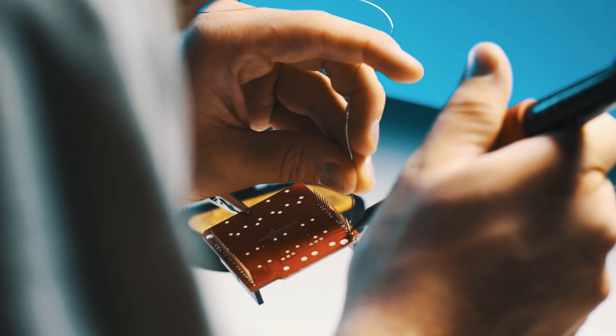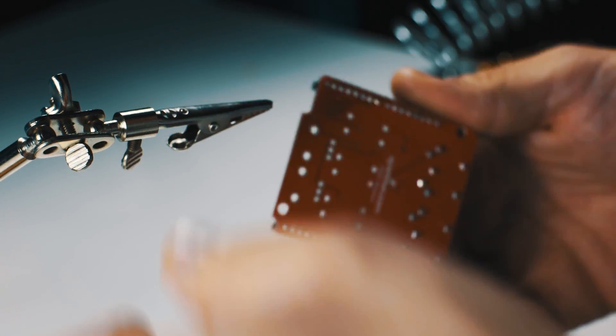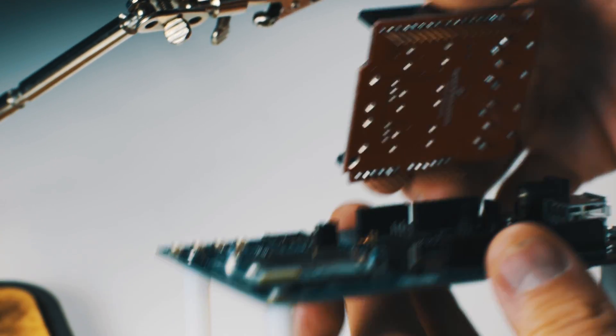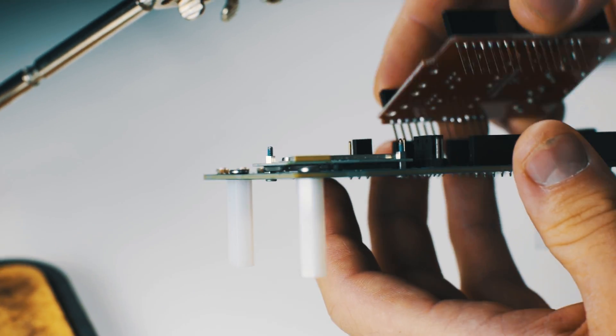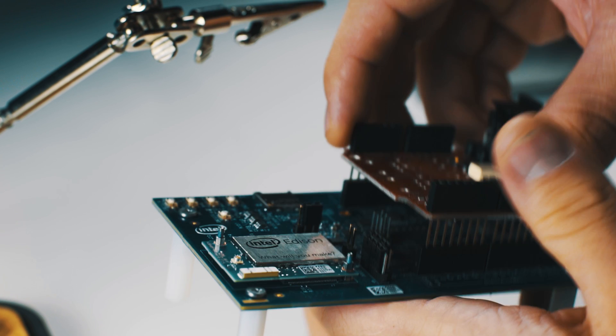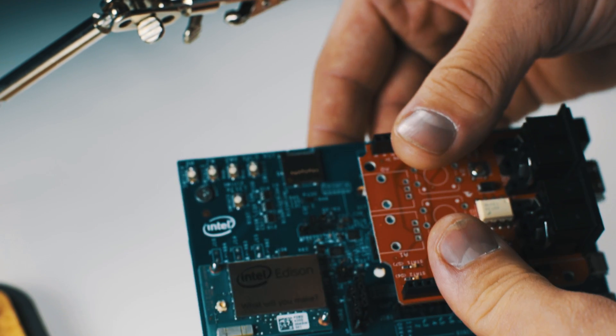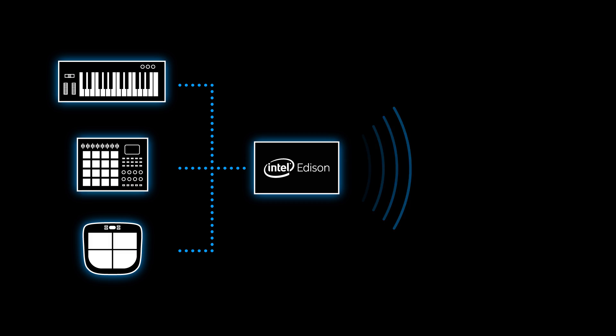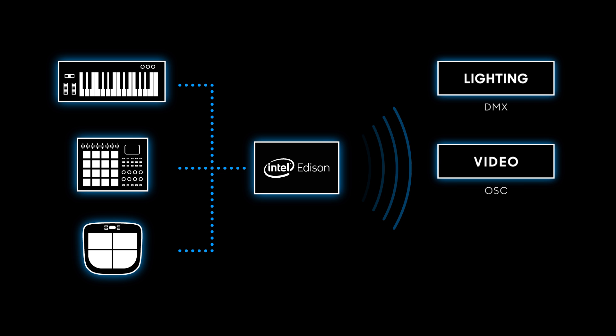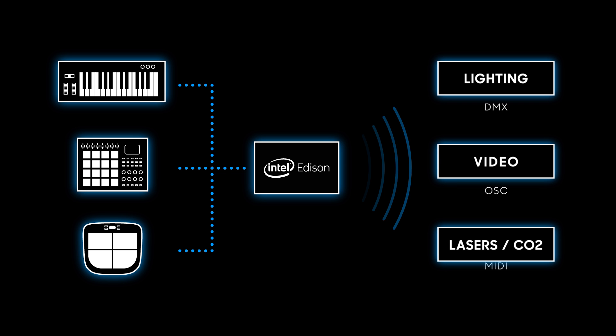By partnering with Intel and using the Intel Edison processor, we were able to take our idea to the next level. Electronic instruments were connected to the Edison board through a MIDI shield, and the Edison processor then communicated with stage elements using industry standard protocols.